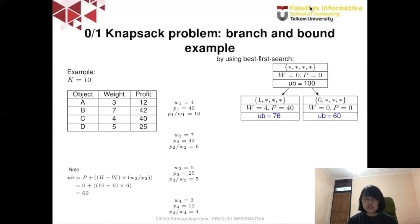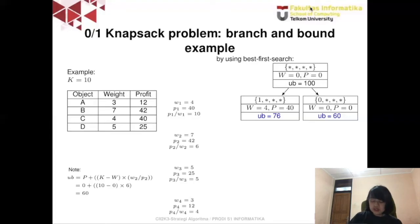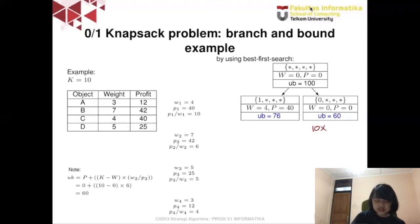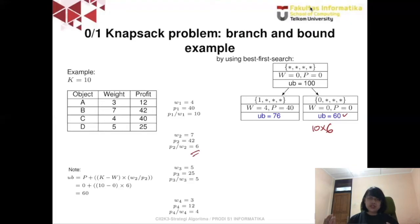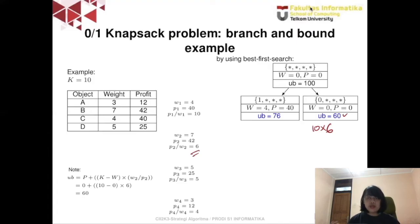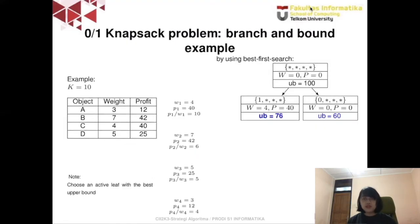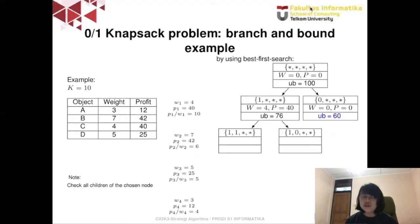We now have two active leaves with upper bounds 76 and 60. Since this is a maximization problem, we select the node with the largest upper bound, which is 76. We then check its children at the second level, determining whether to choose the second item (B) or not. If we choose it, the total weight would be 11, which exceeds the maximum capacity of 10, so that branch is not feasible.